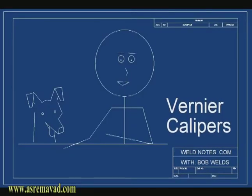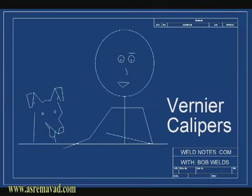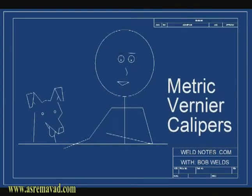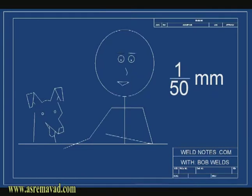Hi, I'm Bob Welds, and this is how to read a metric vernier caliper. There are different kinds of vernier scales designed to do different jobs, but they all work pretty much the same way. Today we're going to look at a metric vernier designed to measure to the nearest one-fiftieth of a millimeter, that is .02 millimeters.